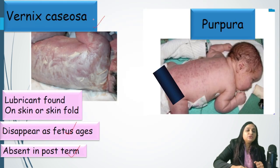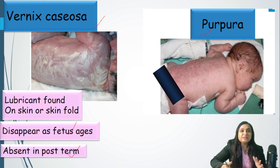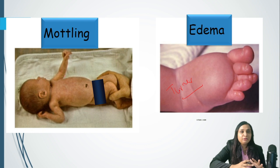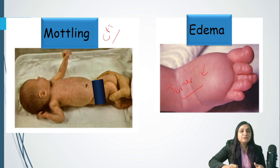After looking at the color, we need to see the skin. Vernix caseosa is a normal physiological finding seen in many newborns — it disappears as the fetus matures and is almost absent in a post-term child. Purpura is a tiny pinpoint hemorrhage that can be seen in any part of the body and could be due to thrombocytopenia. Mottling is a sign of poor perfusion where a web-like formation is seen all over the body — it could be associated with poor capillary refill time, tachycardia, or abnormal NIBP.